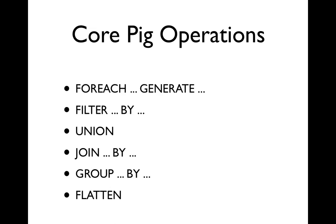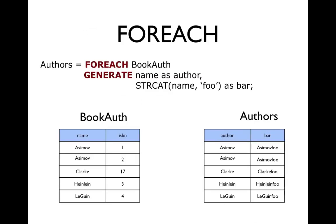Now here's the core pig operators, which process these relations to generate other relations. The most basic operator is probably the foreach generate. It lets you, the input is a relation, and you declare which columns should be kept, possibly renaming them, and you can define new columns at this time. You can think of it as a function that takes in a tuple in the original relation, and outputs a tuple in the new relation.